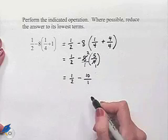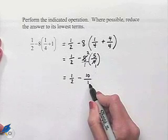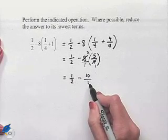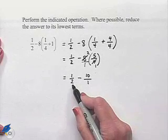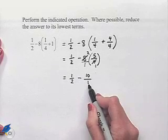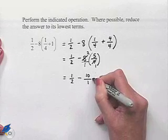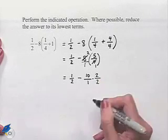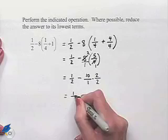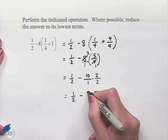In order to do this subtraction, we'll need to have common denominators. Notice that our denominator here of a 2 and a denominator of 1 have a least common multiple of 2. We'll go ahead and multiply the second fraction by 2 over 2 to give us in our next step 1/2 minus 20 over 2.